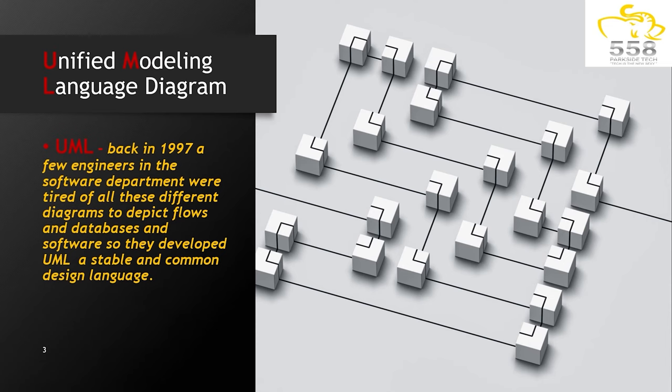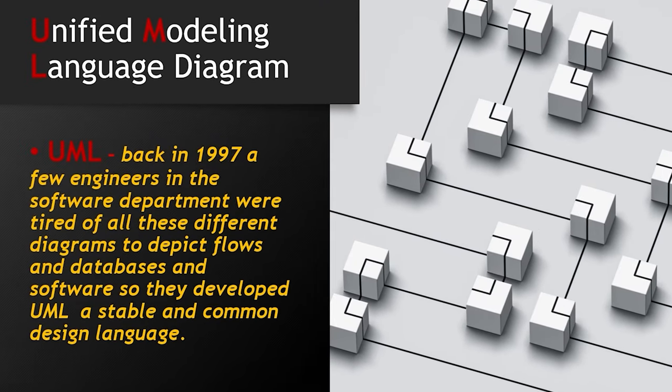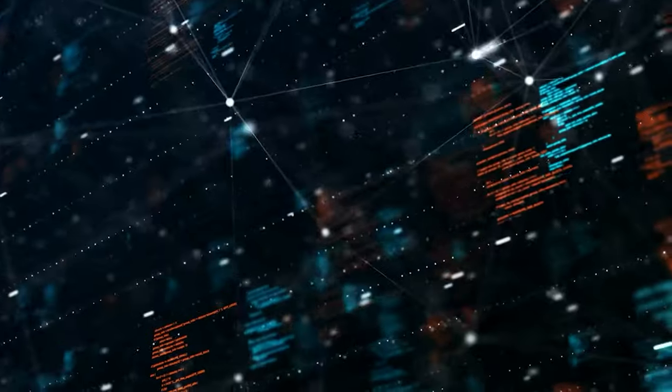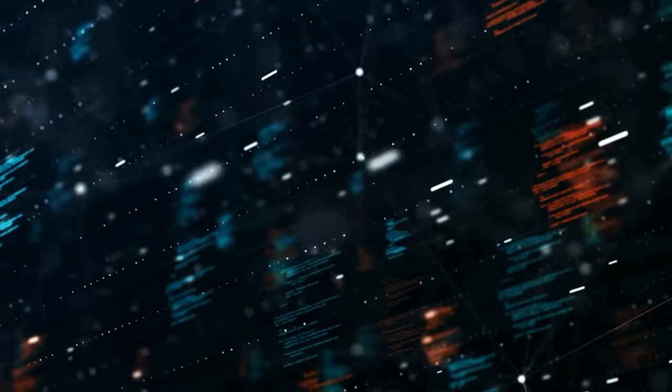So in 1997, because that was an issue in all departments, a group of engineers got together and they came up with UML, Unified Modeling Language Diagrams, and this was supposed to be a unified or uniformed way of writing out what we do in software.